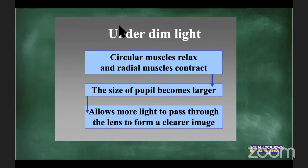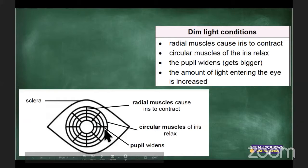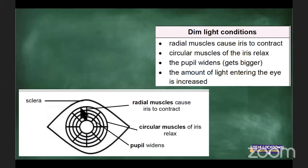Can your pupil get damaged? The pupil is just an opening, but your radial or circular muscles can be damaged — that's part of your iris. In dim light, the radial muscles go from the center to the edge of the iris; they contract, causing the circular muscles to relax and the pupil to get bigger, widening to allow more light in so you can see in the dark.